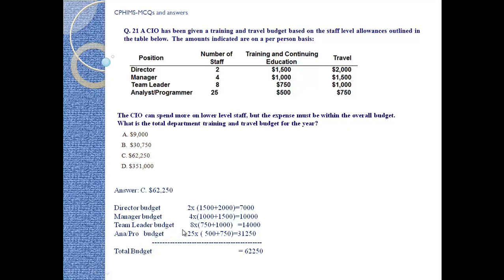Team leader budget: total number of staff 8, per person training and continuing education $750 and travel $1,000. Multiply — total comes to $14,000. Analyst/programmer budget: total number of staff 25, per person training and education $500 and travel $750 — total comes to $31,250.